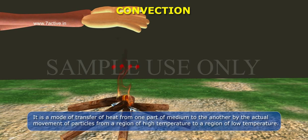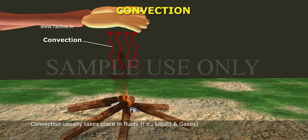It is a mode of transfer of heat from one part of medium to another by the actual movement of particles from a region of high temperature to a region of lower temperature. Convection usually takes place in fluids, i.e., liquids and gases.